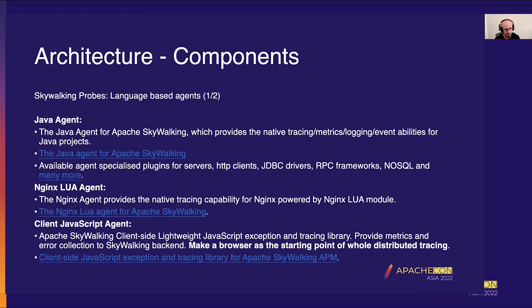Let's talk more about language-based agents. There's a Java agent which provides native tracing, metrics, logging, and event abilities for Java projects. You can configure it with different plugins for more fine-grained metrics about the services, HTTP clients, or different JDBC drivers. There's also an Nginx Lua agent providing native tracing capabilities in Nginx. The client JavaScript agent is a lightweight library that collects exceptions and traces, can be embedded in client-side applications, and allows you to start tracing from the client side and correlate it with all your backend services.